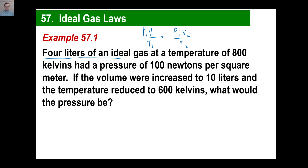All you need to do now is fill in the blanks — you're going to have one unknown, so it's a piece of cake. 4 liters of an ideal gas — that's your volume, so put 4. Temperature of 800 kelvins — just write 800. The pressure was 100 newtons — just write 100. You can already see that fraction is going to be one half: 400 over 800. We're done with the first part.